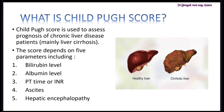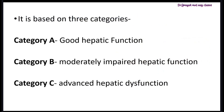The Child-Pugh score is used to assess prognosis of chronic liver disease patients, mainly liver cirrhosis. The score depends on five parameters: bilirubin level, albumin level, prothrombin time or INR, ascites, and hepatic encephalopathy. It is divided into three categories: A, B, and C. Category A indicates good hepatic function with a better outlook. Category B indicates moderate to impaired hepatic function, making patients potential candidates for proper treatment. Category C indicates advanced hepatic dysfunction, with high mortality and a lifespan of one to three years.